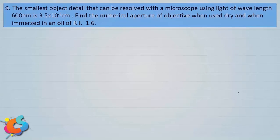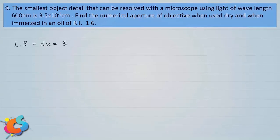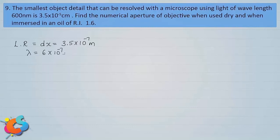Students should first know that the smallest detail which can be resolved using a microscope is nothing but the limit of resolution of the microscope. So it is directly given as the limit of resolution, symbol DX, with value 3.5 × 10⁻⁵ centimeter, or 3.5 × 10⁻⁷ meter. The incident light has wavelength 600 nanometer, which is 6 × 10⁻⁷ meter.